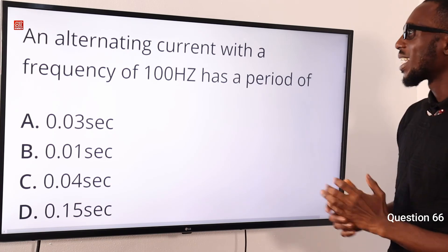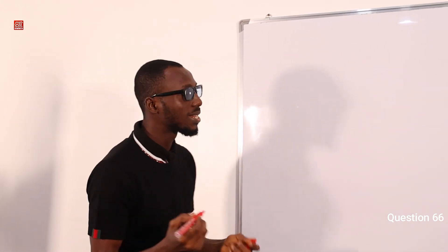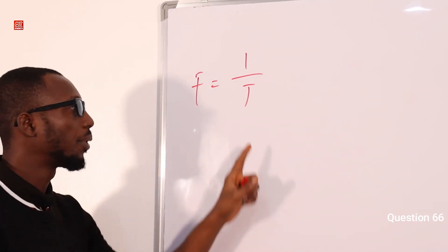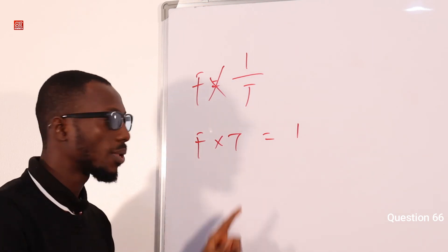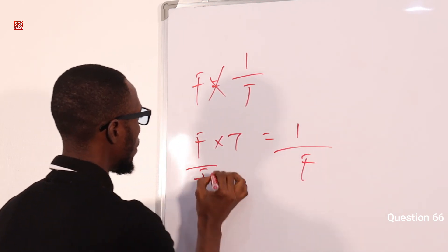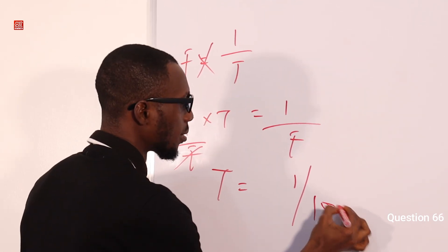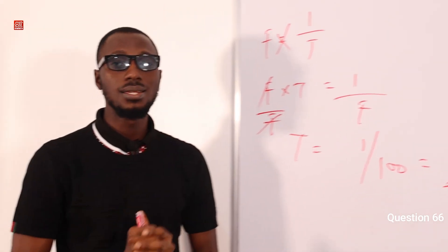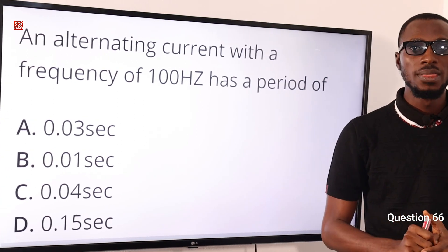Question 66: An alternating current with a frequency of 100 Hz has a period of what? The relationship between frequency and period is: frequency equals 1 over T, so T equals 1 over frequency. With frequency given as 100 Hz, the period T equals 1 over 100, which is 0.01 seconds. Looking through the options, the correct option is option B, 0.01 seconds.